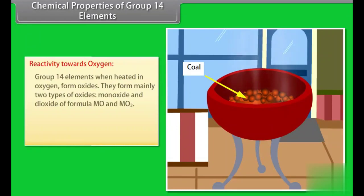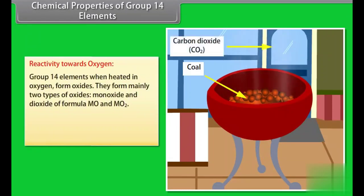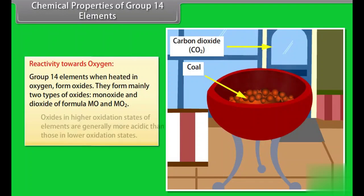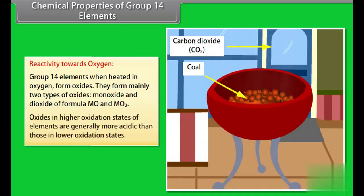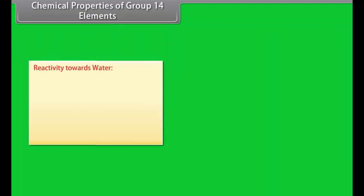Chemical properties of group 14 elements. Reactivity towards oxygen: Group 14 elements when heated in oxygen form oxides. They form mainly two types of oxides, monoxide and dioxide of formula MO and MO2. Oxides in higher oxidation states of elements are generally more acidic than those in lower oxidation states. Reactivity towards water: Carbon, silicon and germanium are not affected by water.